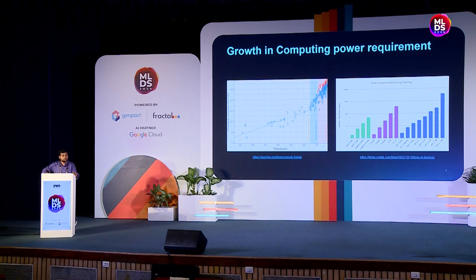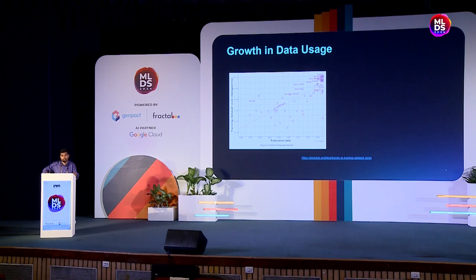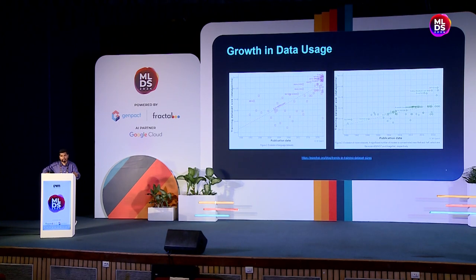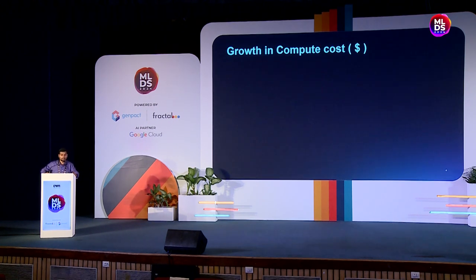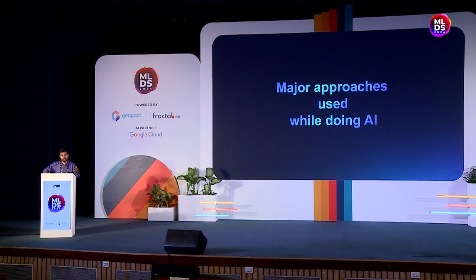The total compute used during training has increased over time, and similarly we've seen growth in data usage. The major point behind these graphs is to make you understand that while AI is evolving, so are its other pillars — data, models, compute. While AI is growing, so is compute cost, and every company wants to optimize that cost while also optimizing how we use data and models optimally.